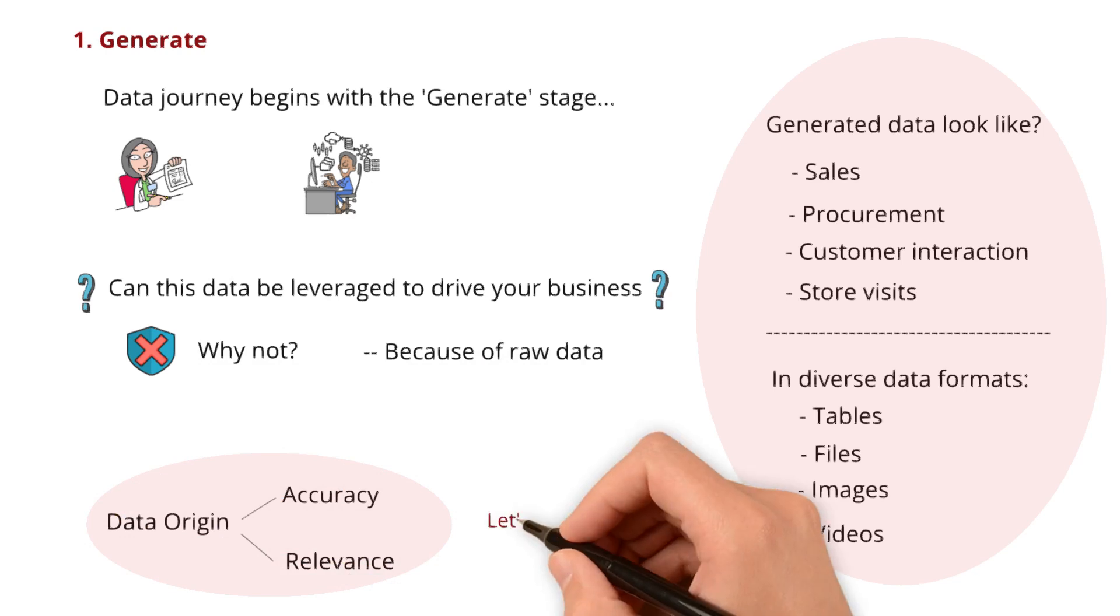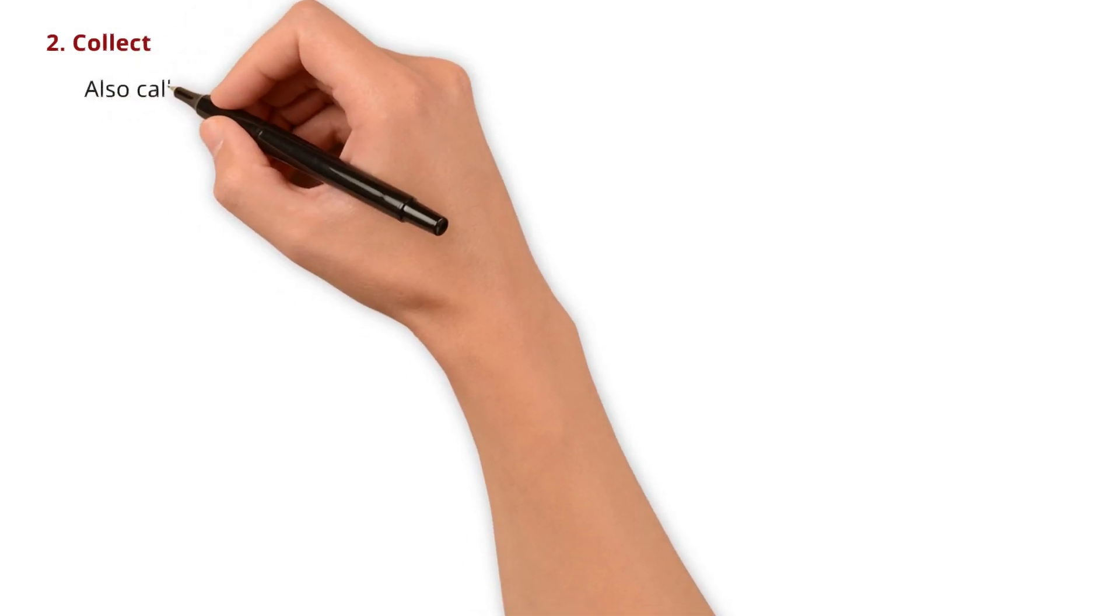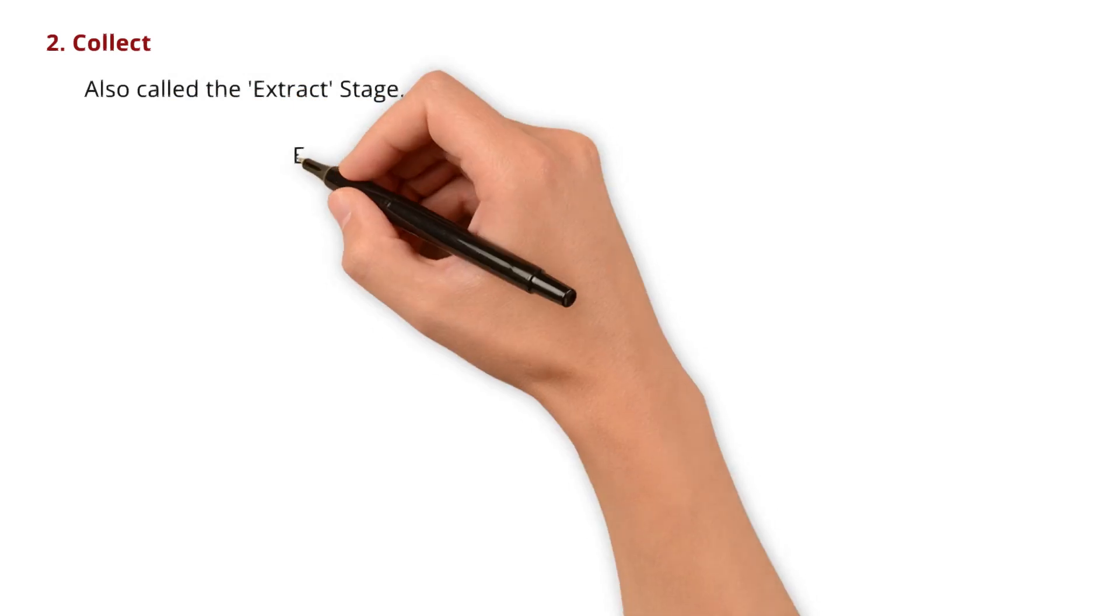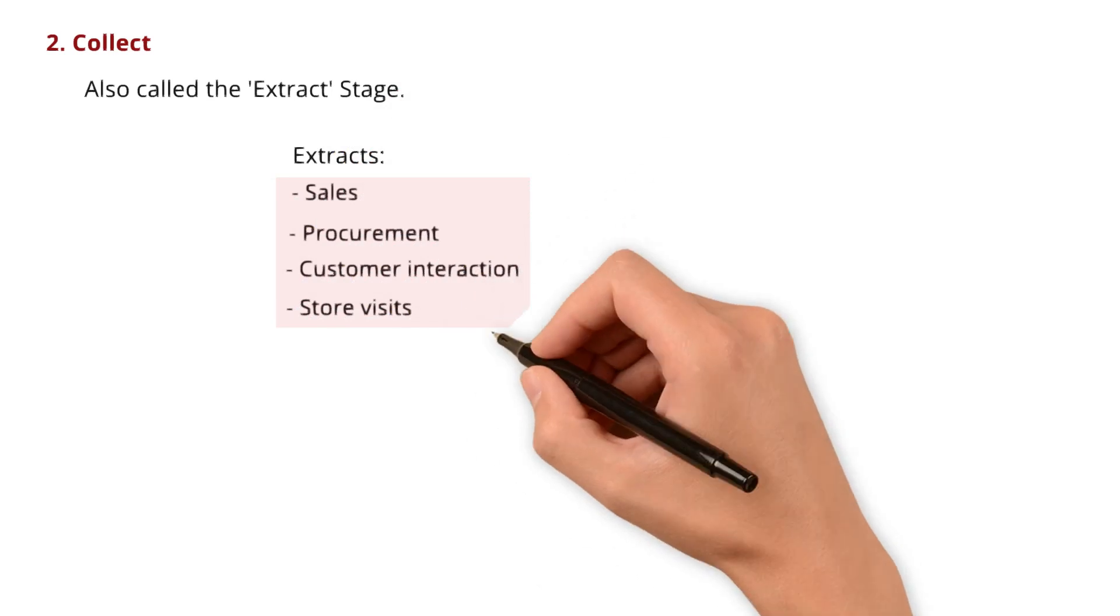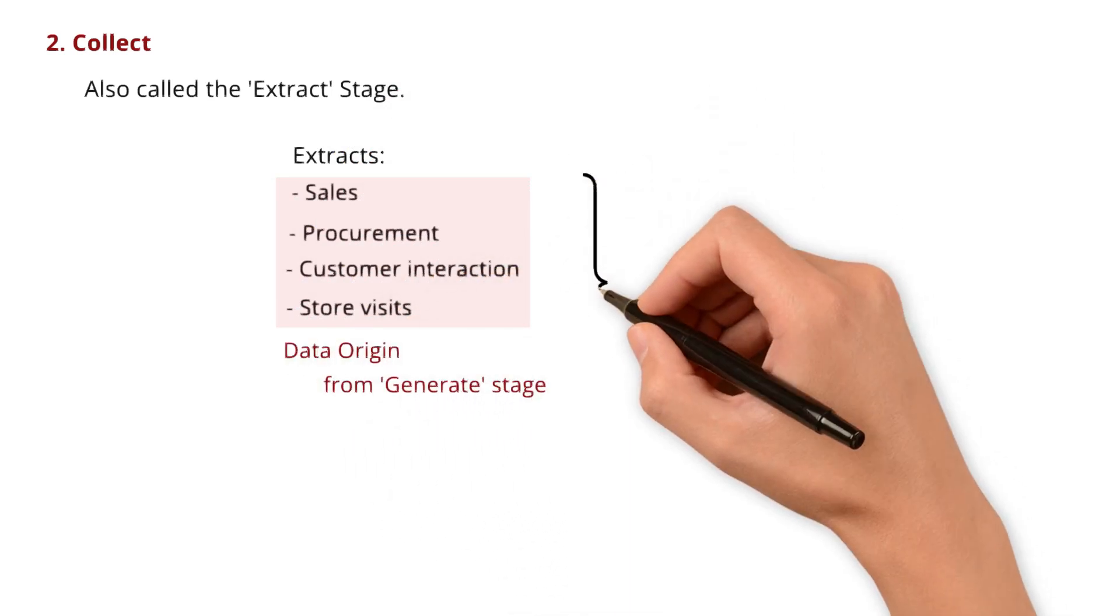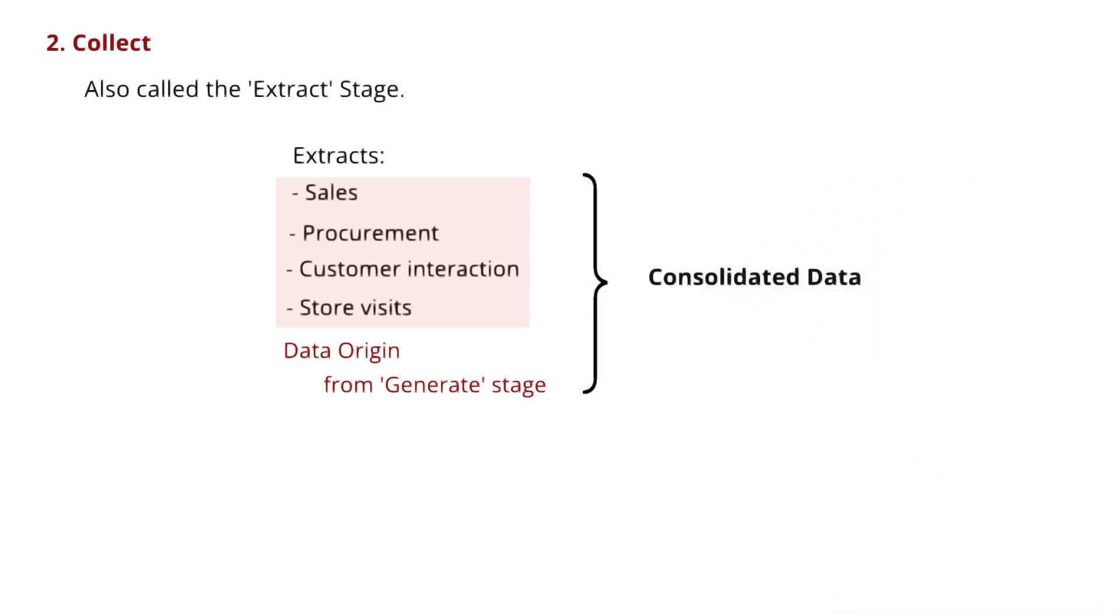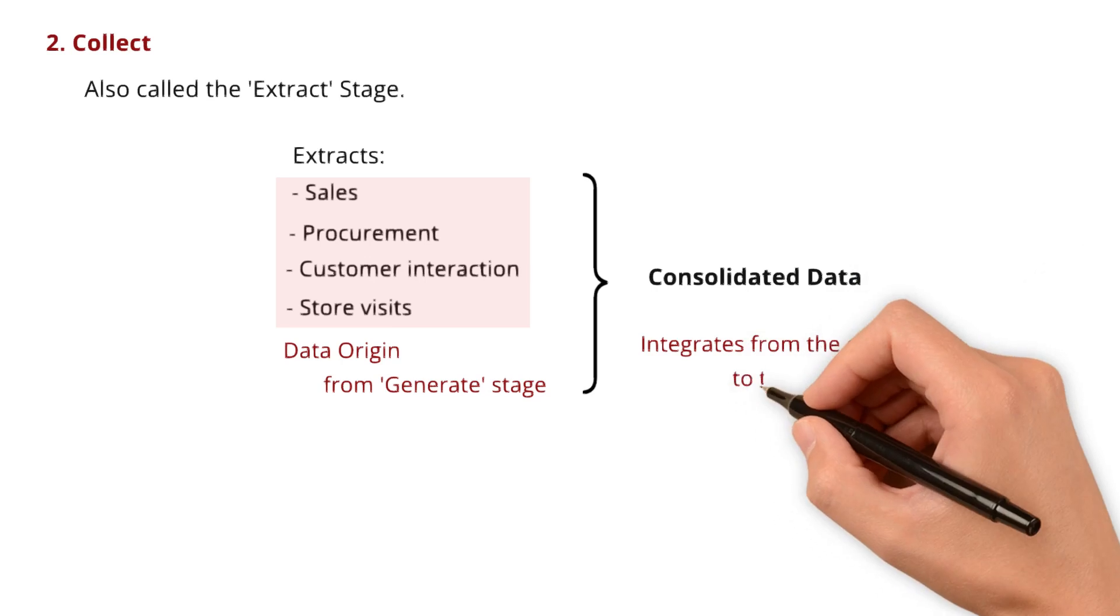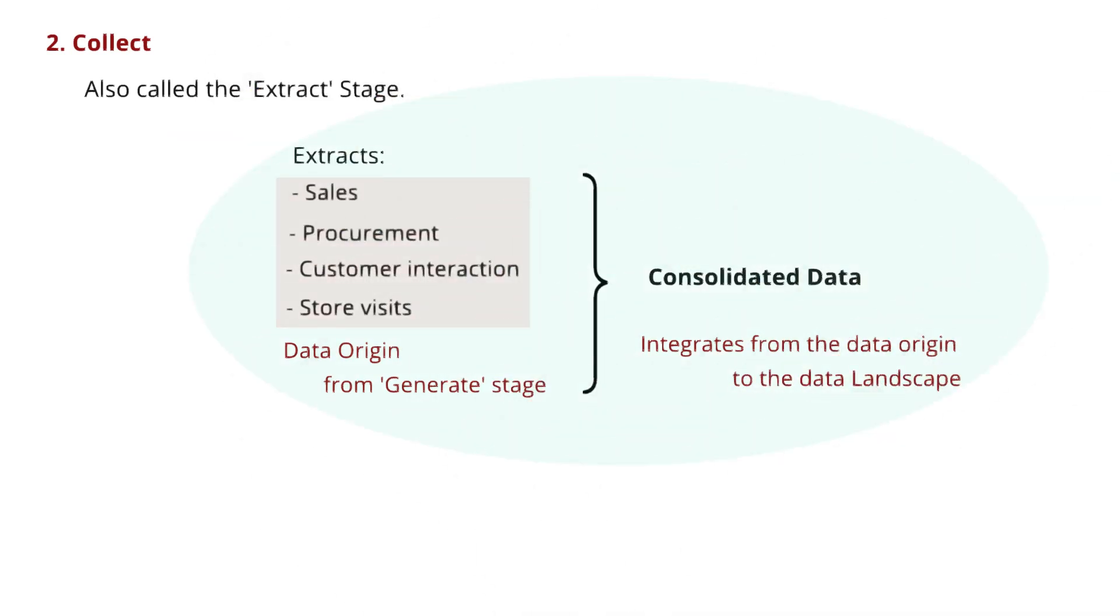So, let's move to the next stage: collect. The collect stage is also called the extract stage. Because this stage involves extracting the data from all those diverse sources we just discussed about and consolidating it in a centralized location. This could mean integrating the data from its origin into your data landscape. This stage is more like collecting the rocks from the ground and bringing them to the lab where they will be transformed into gemstones.